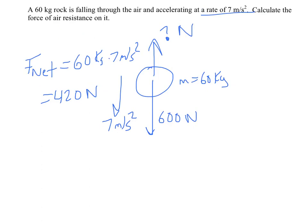And so if it's accelerating downward, that means the net force is 420 newtons downward. So that means friction must be acting against the 600 to give us the 420. And so how much is the air resistance? It's the difference between them, in this case, 180 newtons. That would be the force of air resistance.